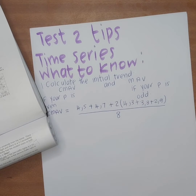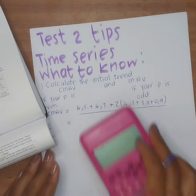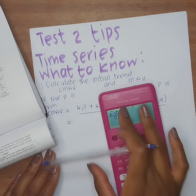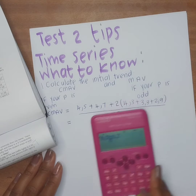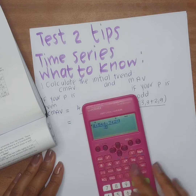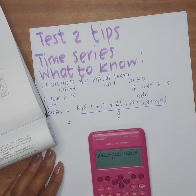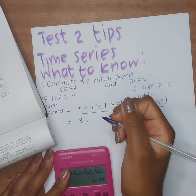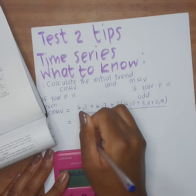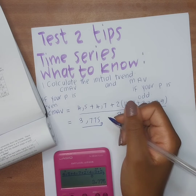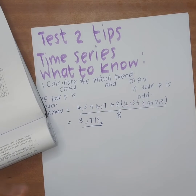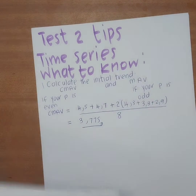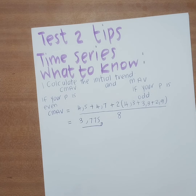To save time, use this formula. Your CMAV in this instance would be: (4.5 + 4.7 + 2×(4.3 + 3.3 + 2.9)) ÷ 8, which gives you approximately 3.775. That is the simplest way to calculate your CMAV.